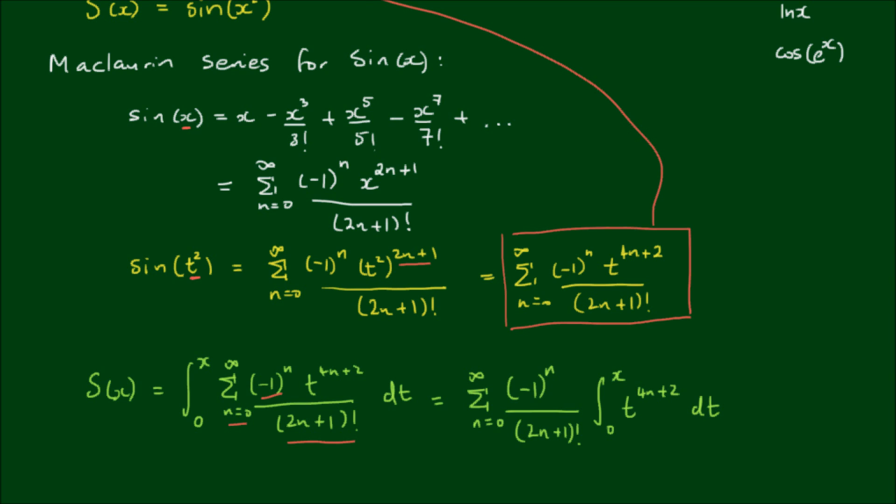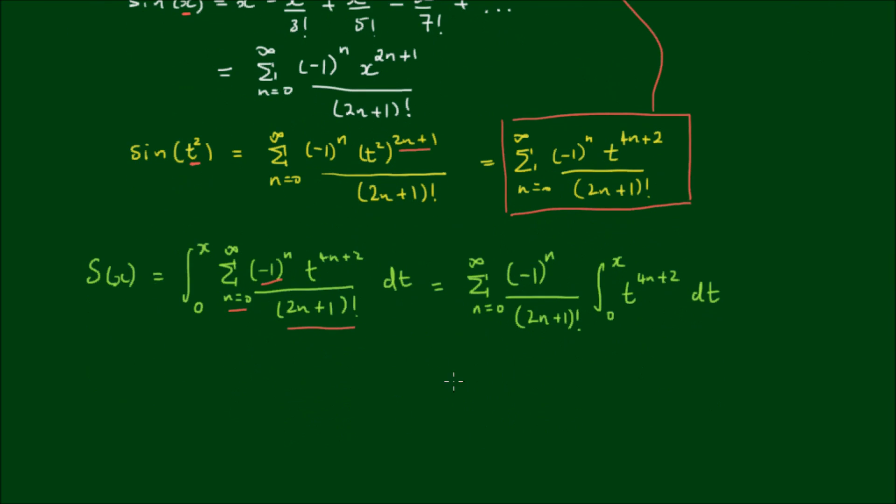And this is then a simple power integral. So the result is the sum from n equals 0 to infinity, of (-1)^n on (2n+1) factorial, by t to the 4n, and we increase the power by 1, so t^(4n+3), and divide by the new power, 4n+3. And of course this has to be evaluated between the bounds of x and 0.